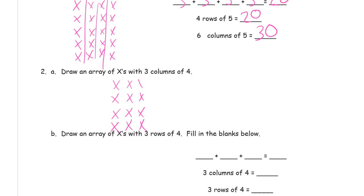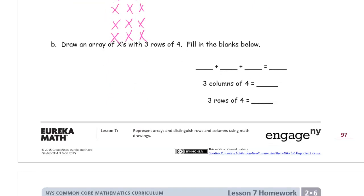Yeah that's a column. There's four in it. So I have. Okay good. Draw an array of X's with three rows of four.